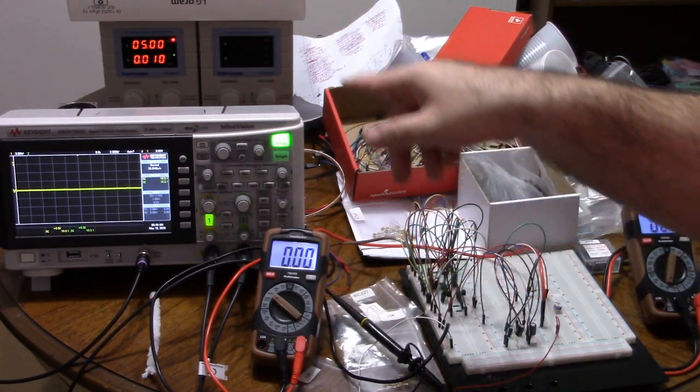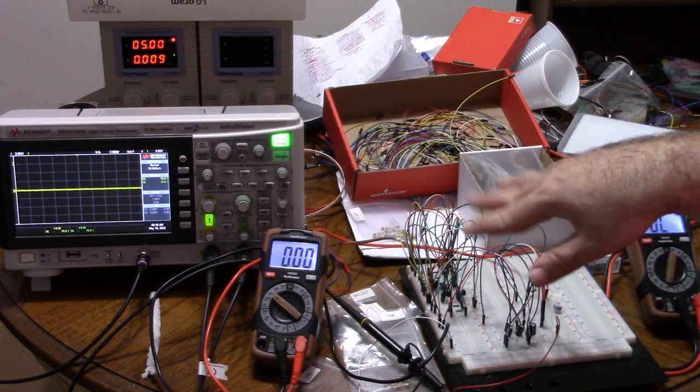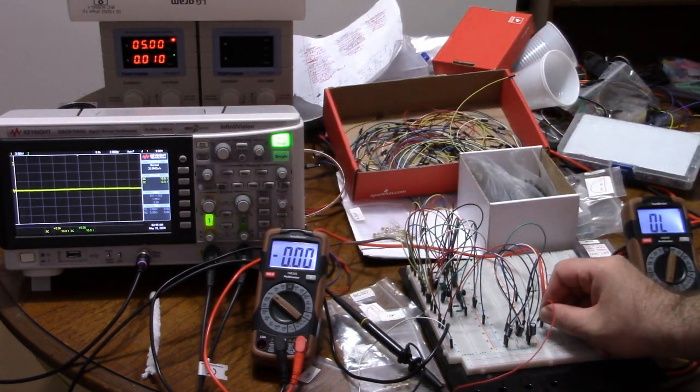5 volts supply. The timer chip is drawing about 9 or 10 milliamps all on its own. Everything else has got no load plugged in, so it's just charged and stable. And if I plug in my oscilloscope...